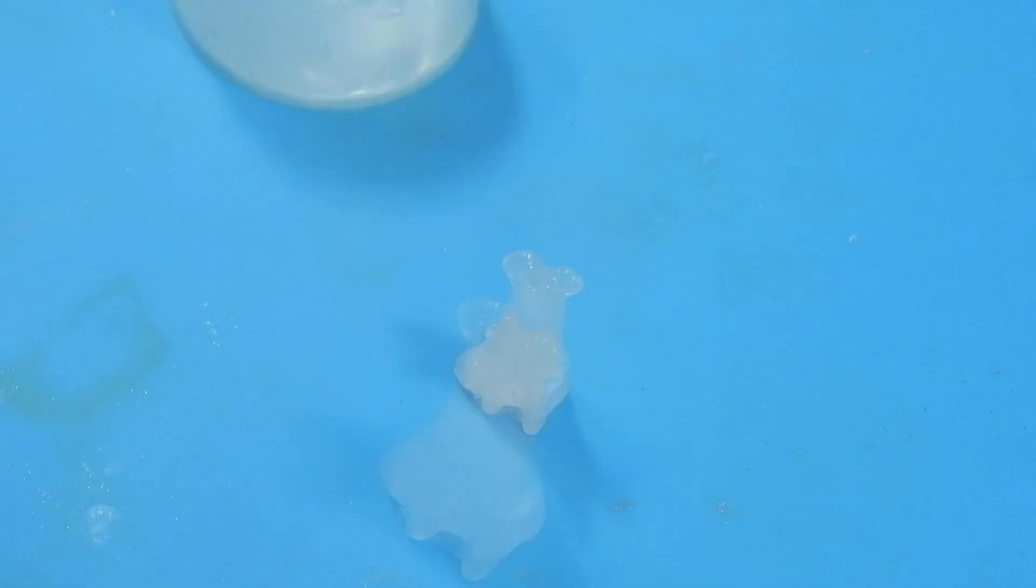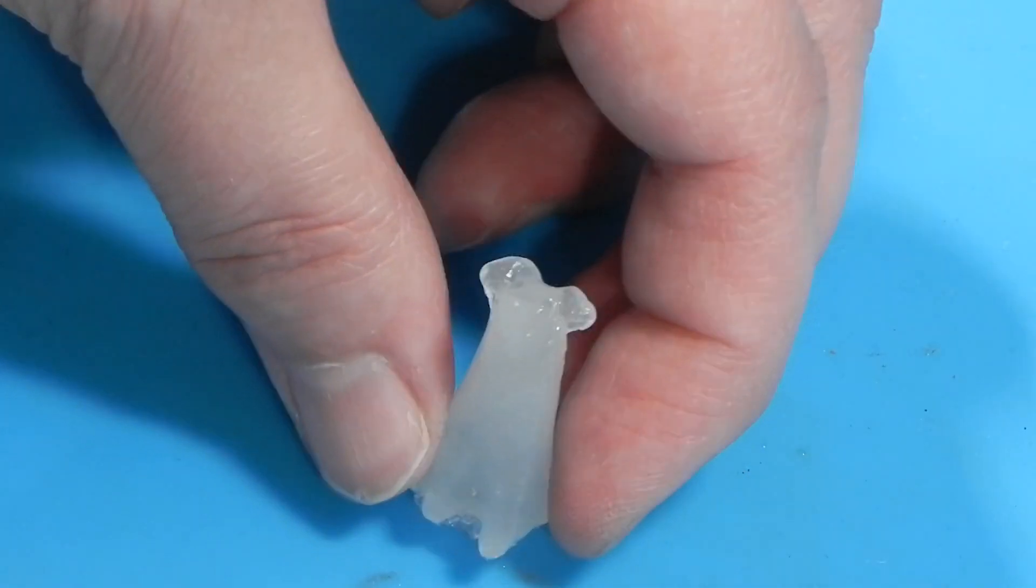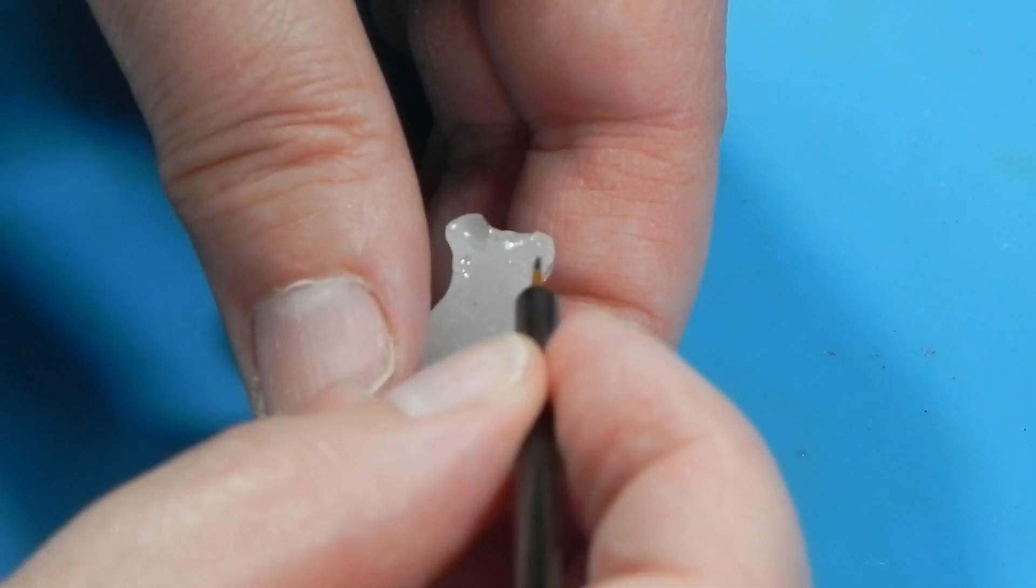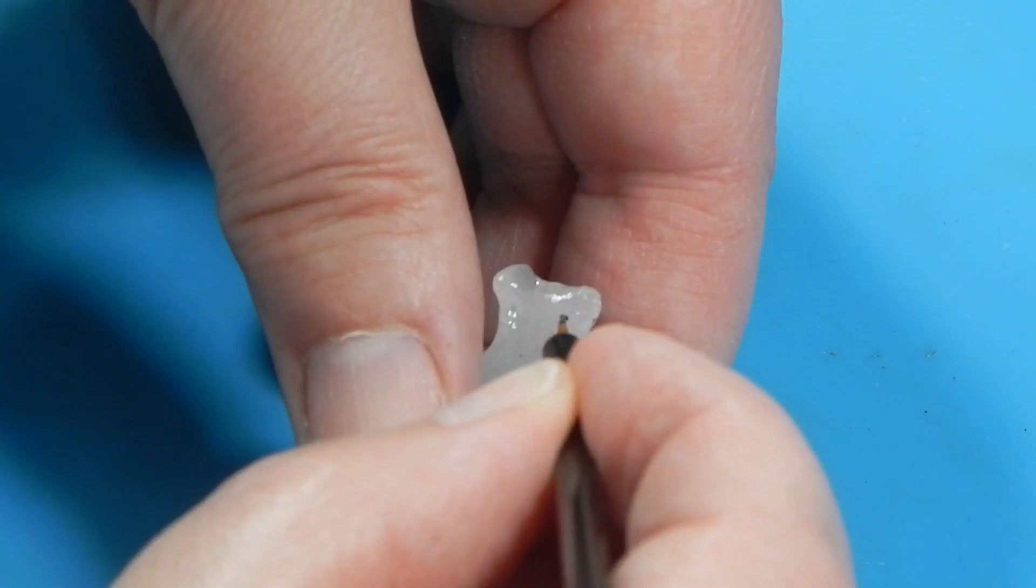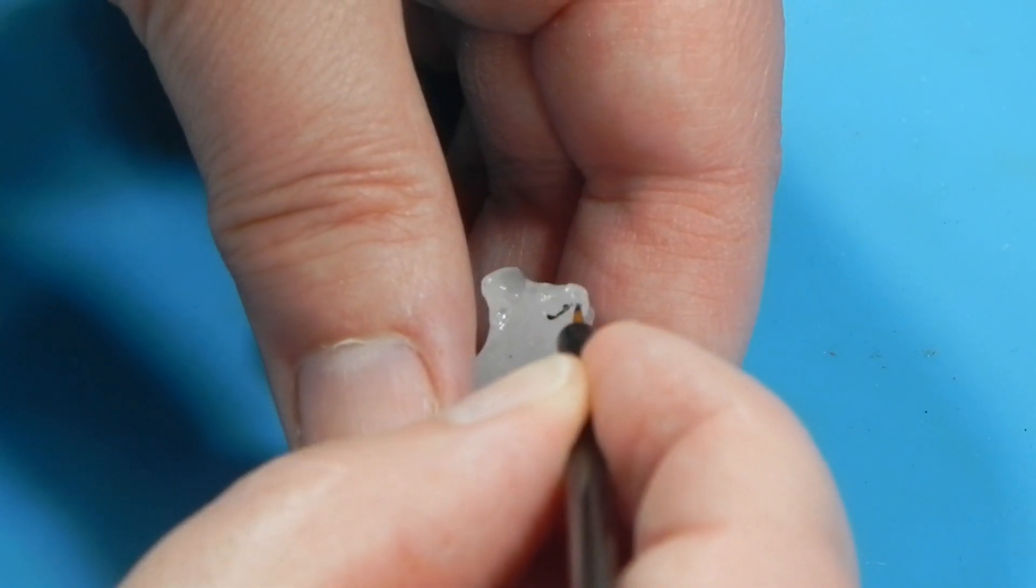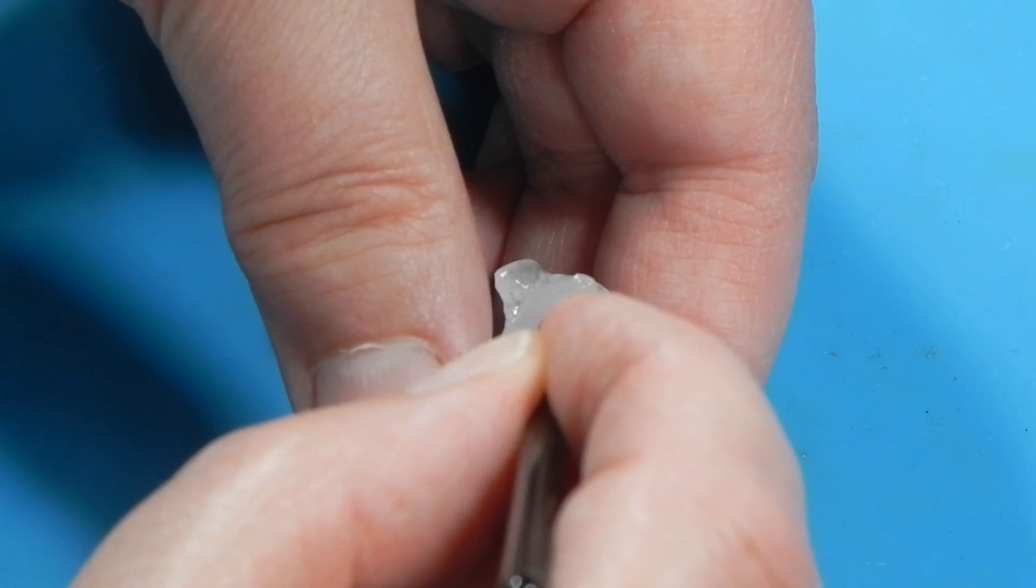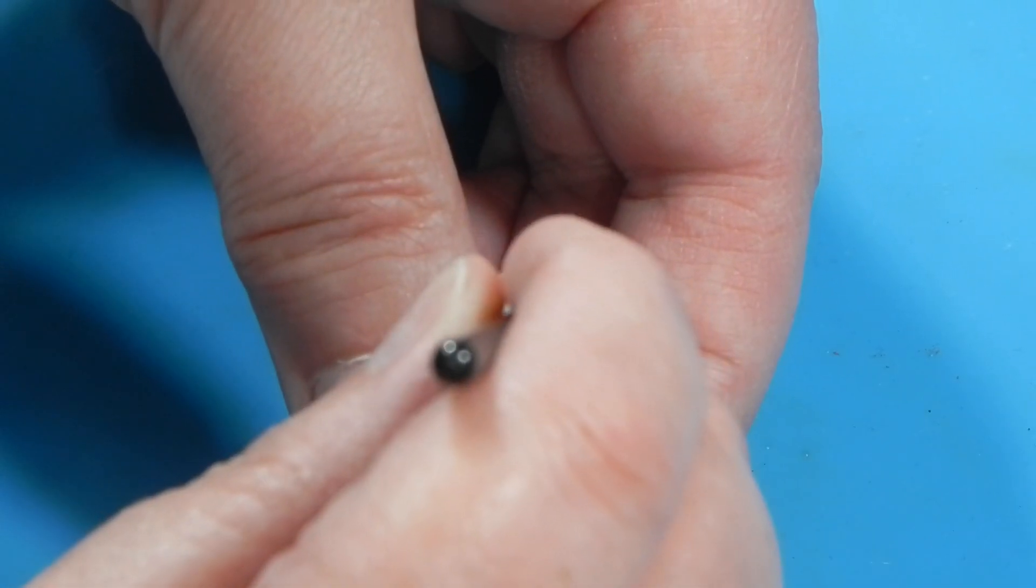But he needs eyes and a mouth. So using a little bit of acrylic paint and a very fine brush, I'm going to go in and just do a little bit of definition on the mouth.